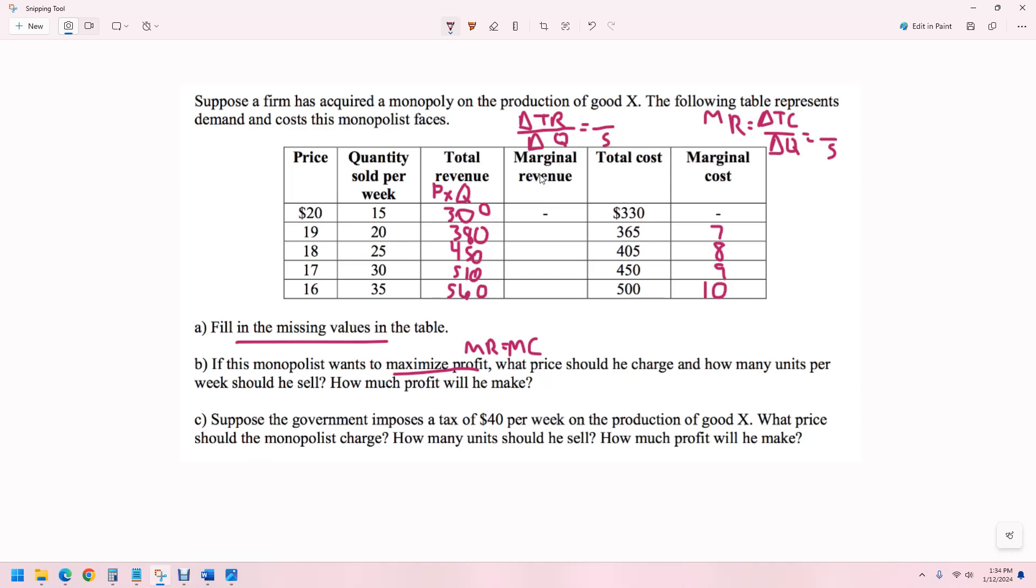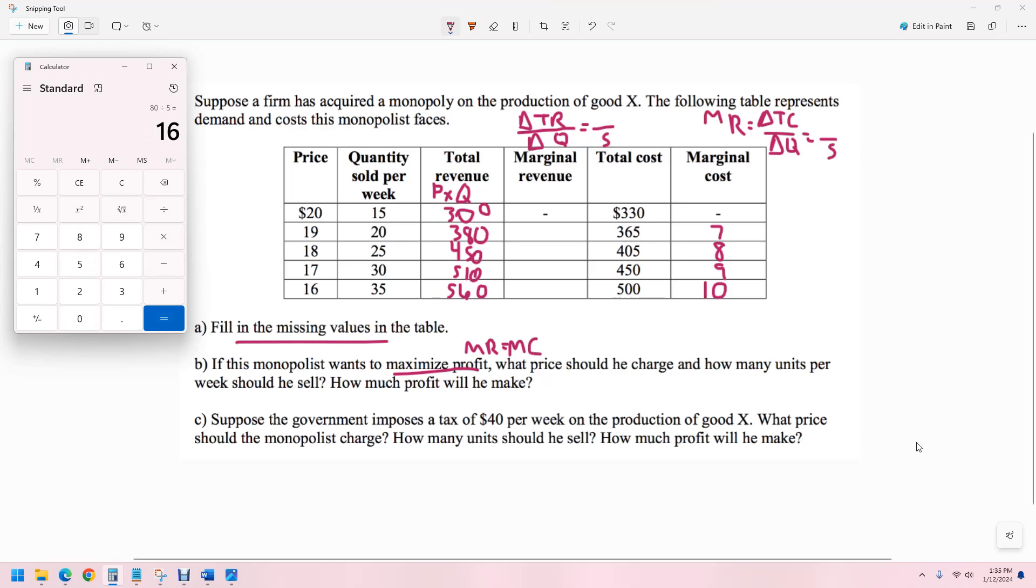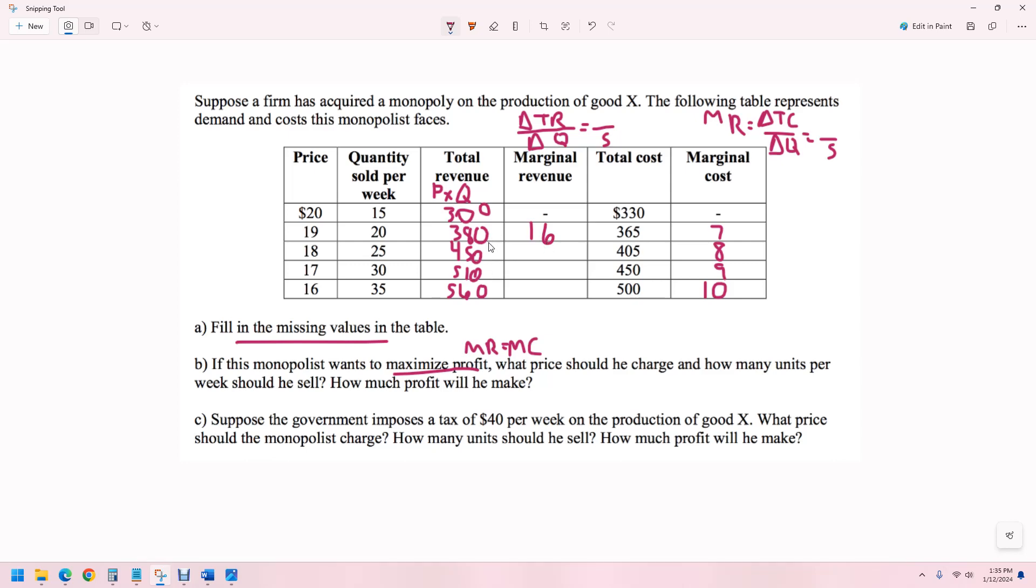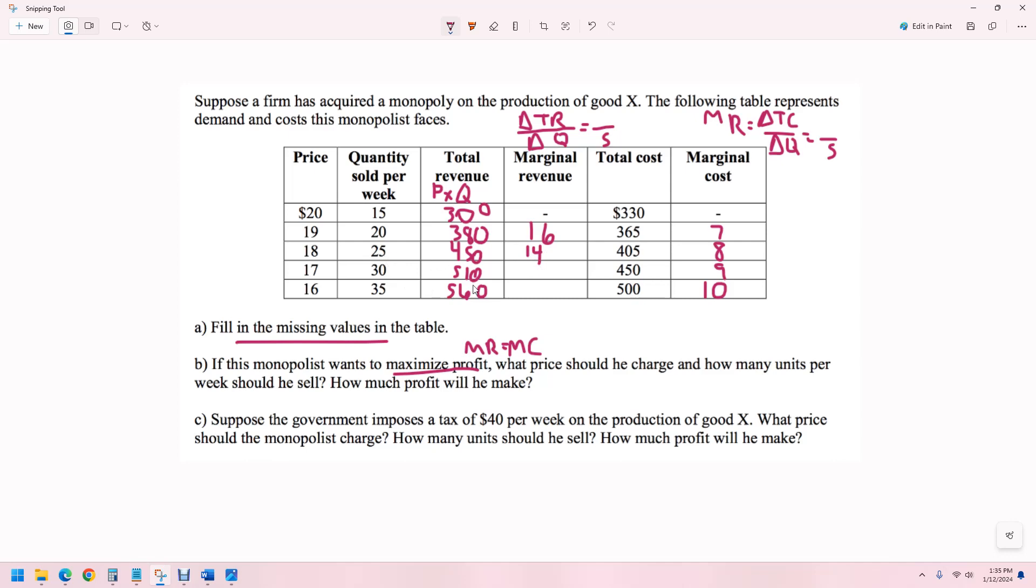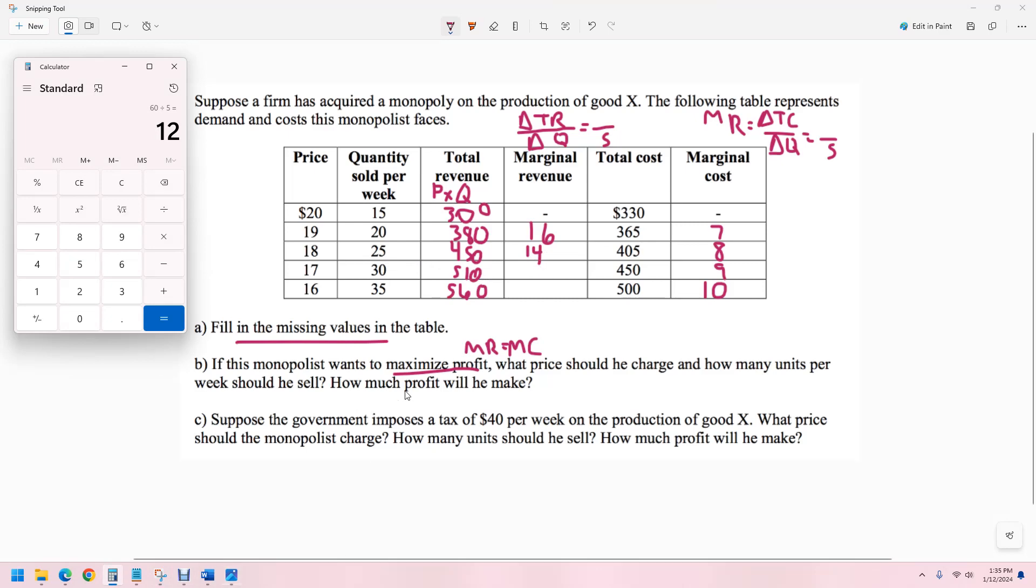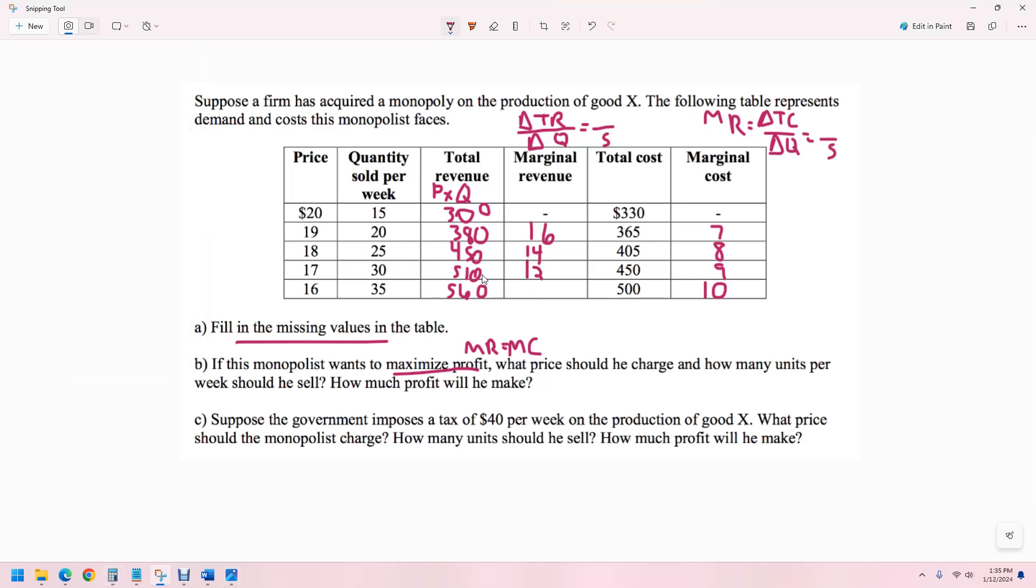Now marginal revenue is the change in total revenue divided by the change in quantity. So here to here, that's 80 divided by five, which is 16. Here to here is 70 divided by five, which is 14. And then 60 divided by five, I'll bet it's 12. And this one is 50 divided by five, that's 10.